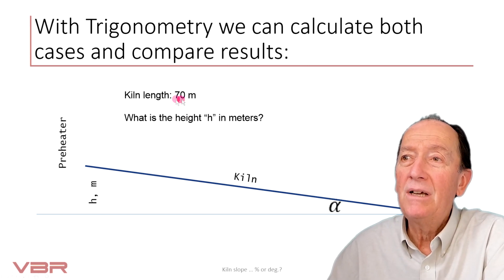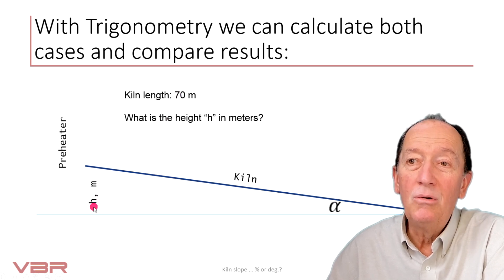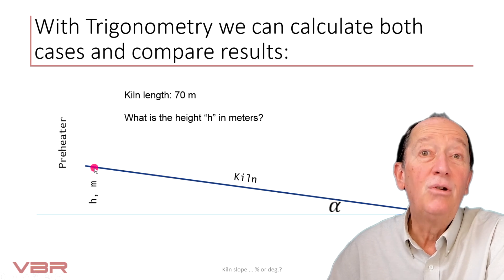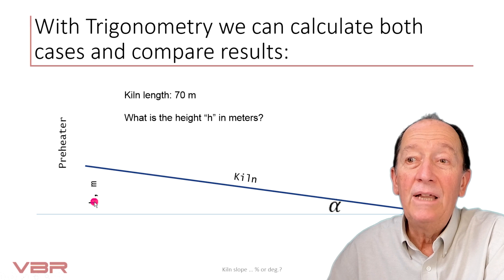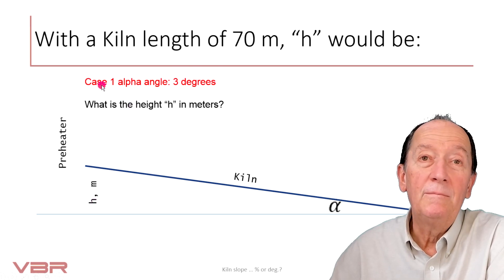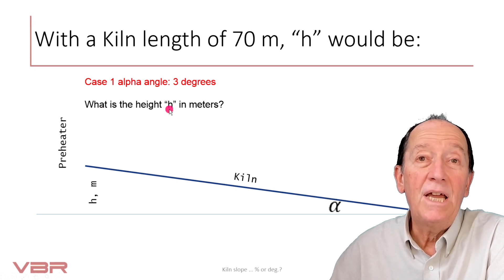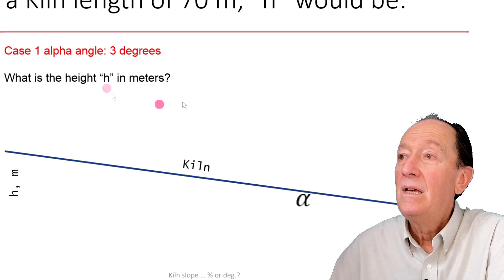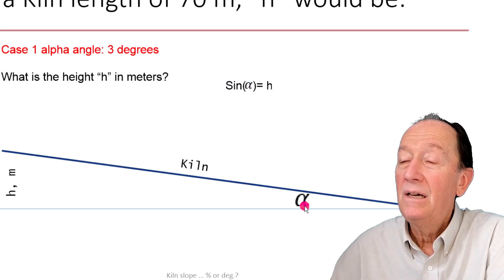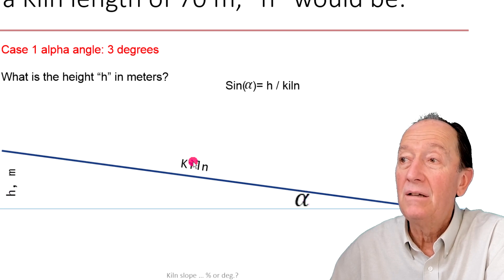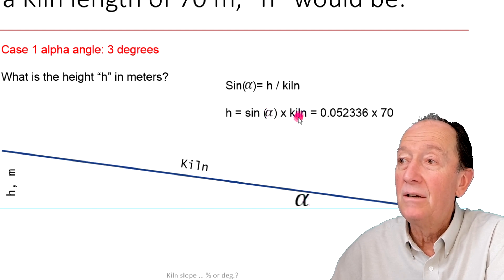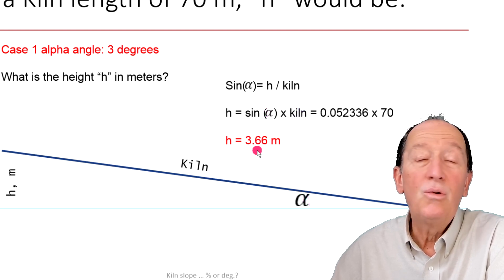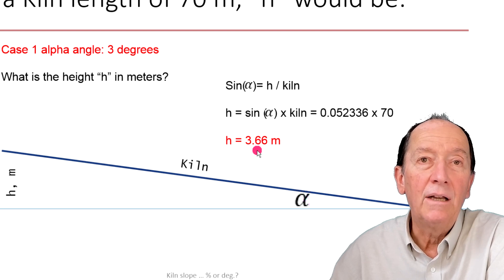Let's take the example we have a kiln of 70 meters and we want to know exactly how higher up is the kiln inlet in comparison to the discharge end of the kiln, the level h. Case 1, angle alpha is 3 degrees. What is the height of h in meters? We know that sin α is equal to h divided by kiln. So, h equals sin α times the kiln. h would be 3.66 meters. Pretty high in my book.